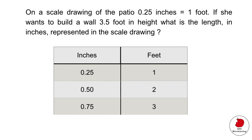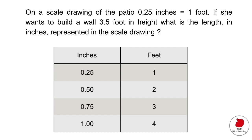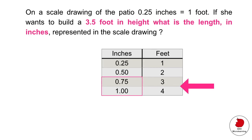And how much is four feet? Once again, just add 0.25. So now you have an idea of how many inches equal how many feet in real life. Going back to the question, the wall is going to be 3.5 feet in height. If you look back at your table, you can see that value is going to be between 3 and 4 on the right side.